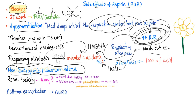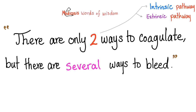Aspirin can lead to non-cardiogenic pulmonary edema. Renal toxicity — first, direct drug toxicity causing toxic acute tubular necrosis. Second, inhibiting cyclooxygenase means no prostaglandins, meaning no increase in GFR — bad for your kidneys. Asthma exacerbation, which we call aspirin-exacerbated respiratory disease. There are only two ways to coagulate, but several ways to bleed, and aspirin is one of those ways. The most common side effect of aspirin is bleeding.